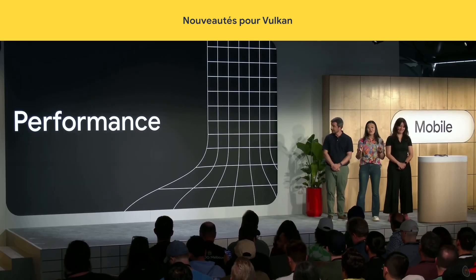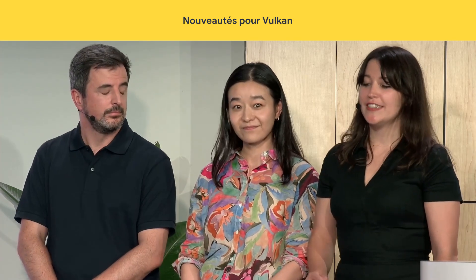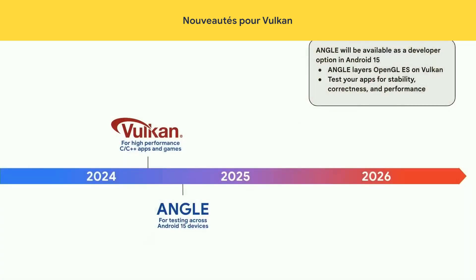Let's talk about performance. Android 15 includes Angle as an optional layer running on top of OpenGL on top of Vulkan, which will help standardize the Android OpenGL implementation for improved compatibility and, in some cases, improved performance.